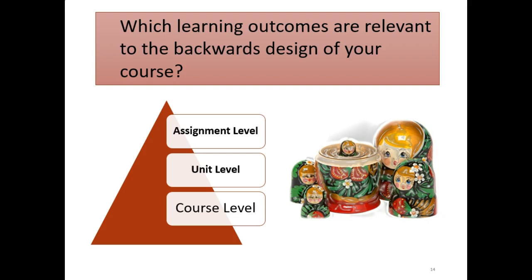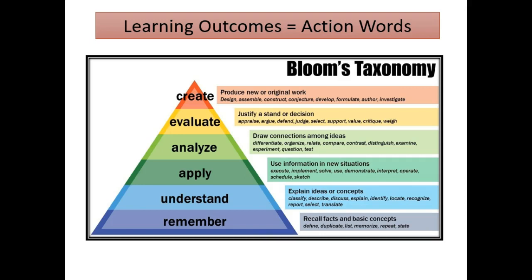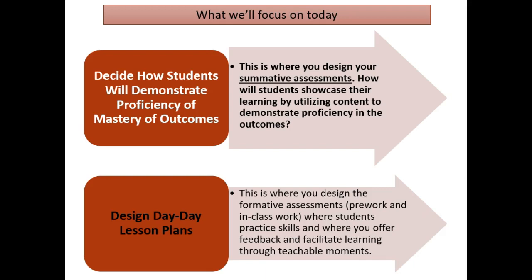There are a variety of levels of outcomes: course level, unit level, and assignment level, as well as program and college level. We can call them outcomes, goals, competencies, or objectives — for our purposes, everything is an outcome. Outcomes are action words using Bloom's taxonomy — things students can or will be able to do. The more clearly you can articulate your learning outcomes, the better. Benjamin Bloom was doing research in active learning back in the 1950s, so this is not something new.